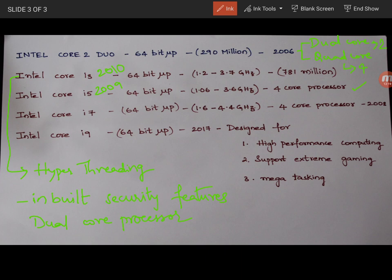And then Core i7. Intel Core i7. It is a 64 bit microprocessor. And which also has 4 core processors. And it was also operating at 1.6 GHz. Nearly the same clock frequency as of Core i5.